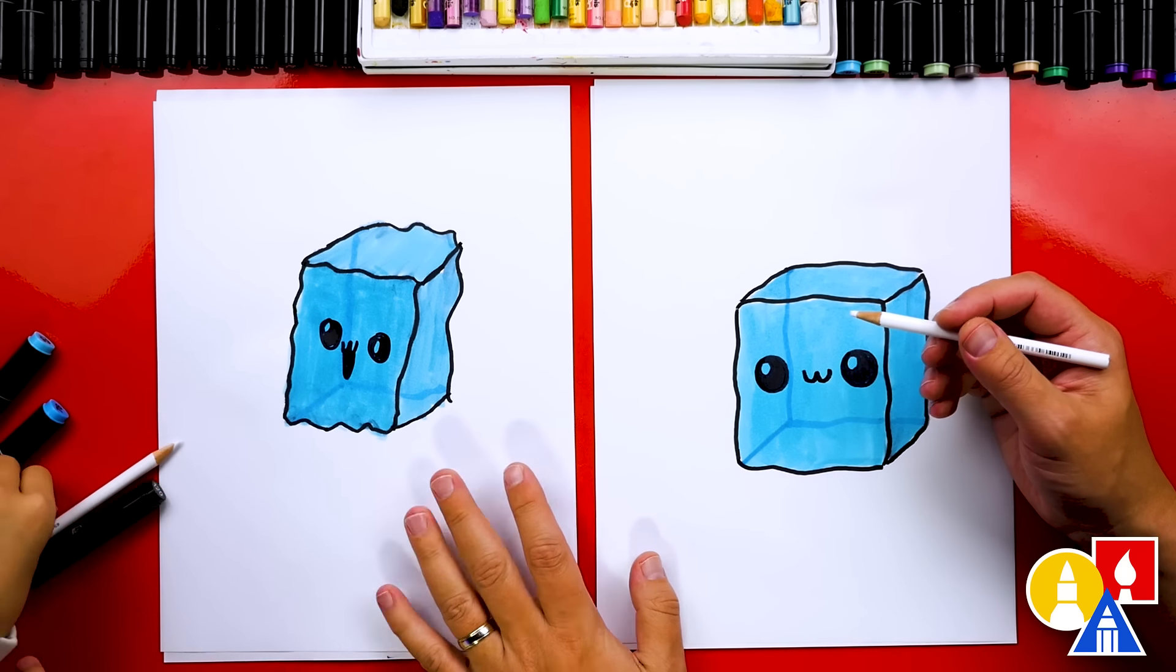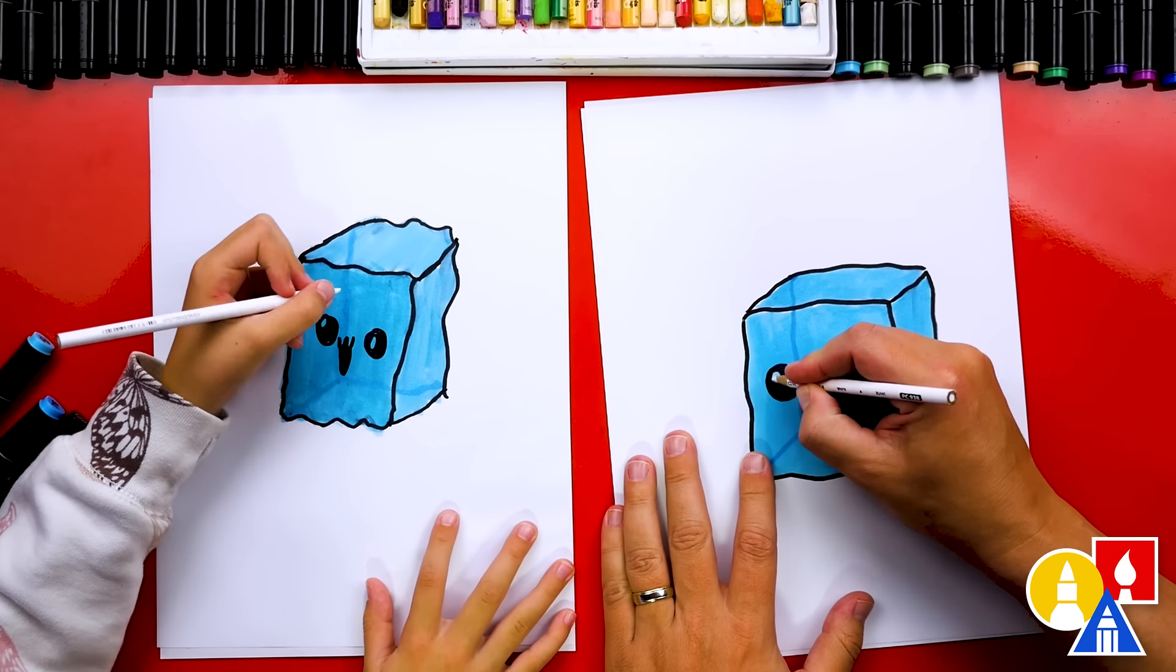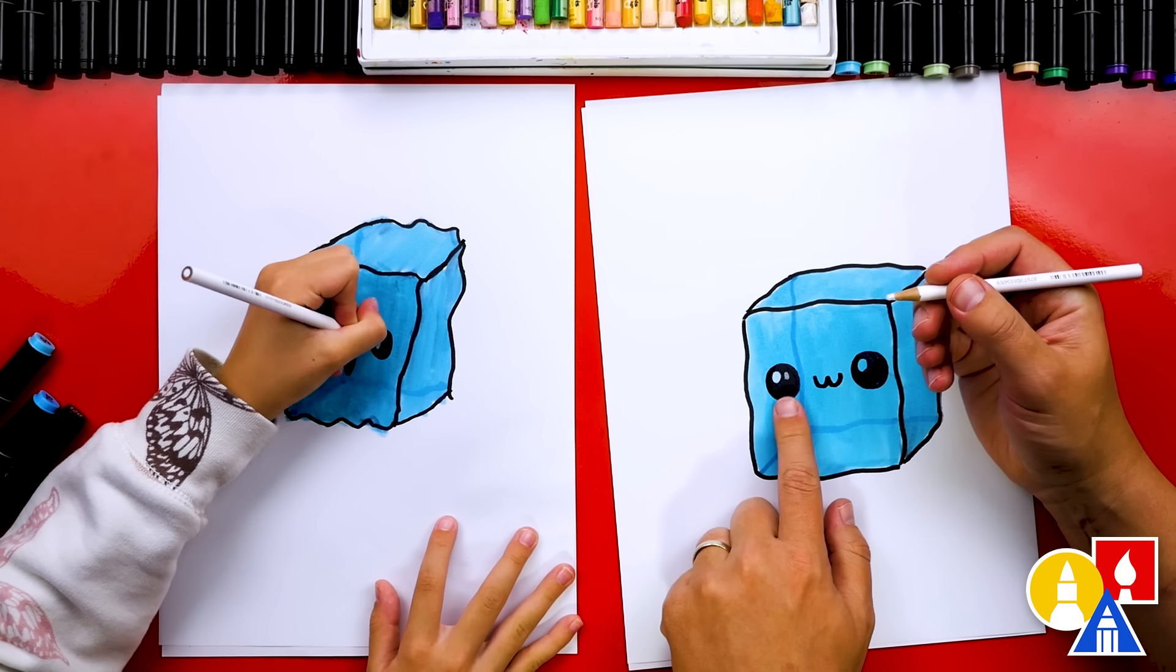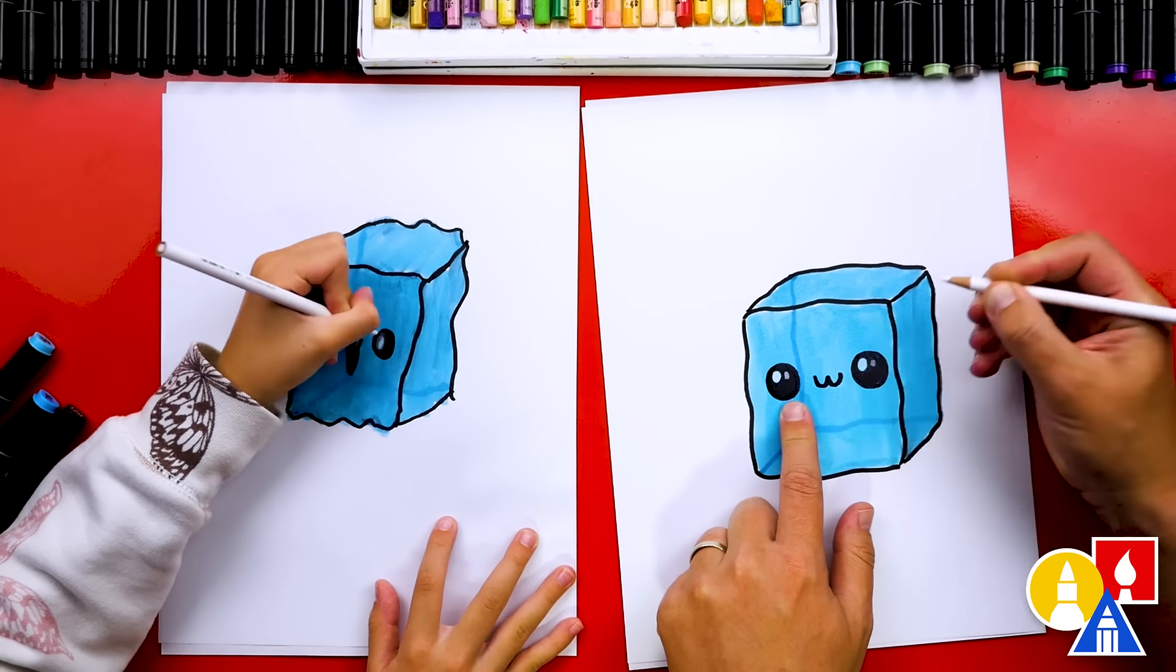Now we're switching to our white colored pencil. It's Prismacolor brand. And I really like this brand because you can layer it on top of the marker. And I'm also adding a small little highlight next to it too.